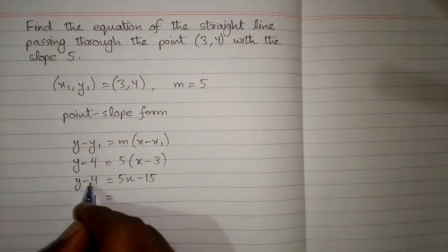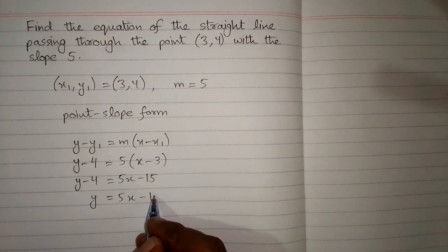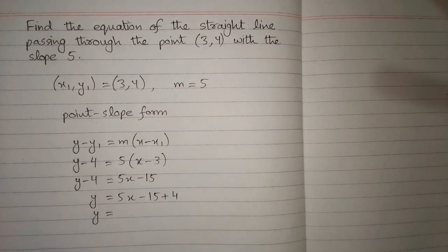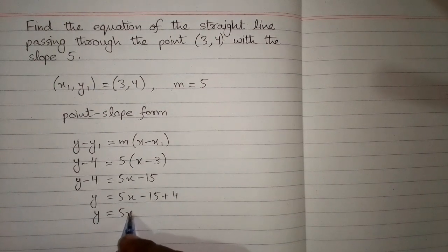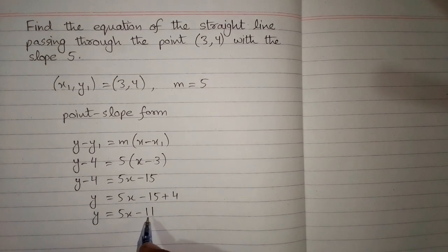Now we can take this minus 4 on this side of equation. So we have y is equal to 5x minus 15 plus 4. So the required equation of the straight line is y is equal to 5x minus 11.